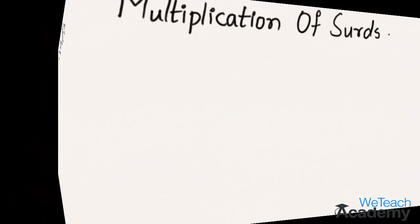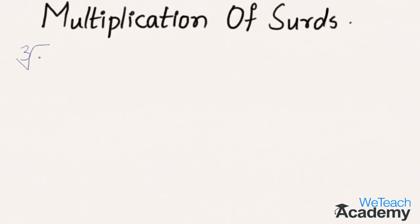Now let us multiply cube root 2 by 4th root 3. Here we have different orders. Cube root 2 can be written as 2 raised to the power 1/3, and 4th root 3 can be written as 3 raised to the power 1/4.